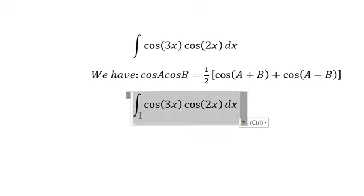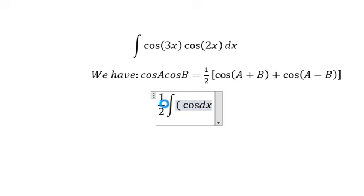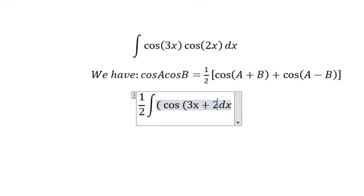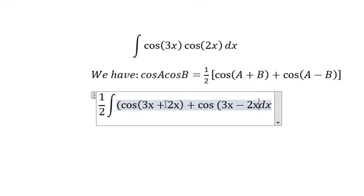Now we put 1 over 2 outside so we can get cos(3x plus 2x) plus cos(3x minus 2x).